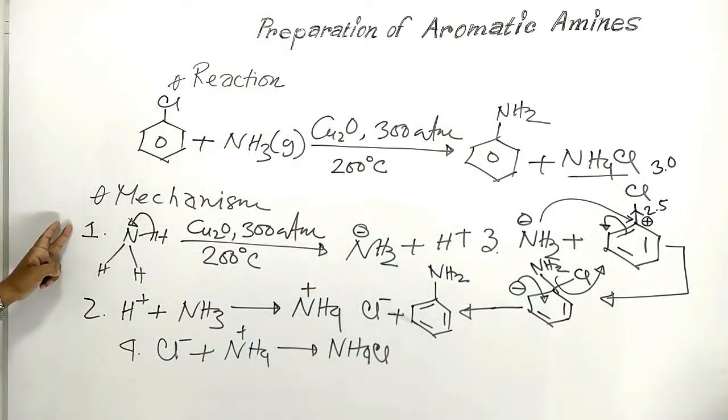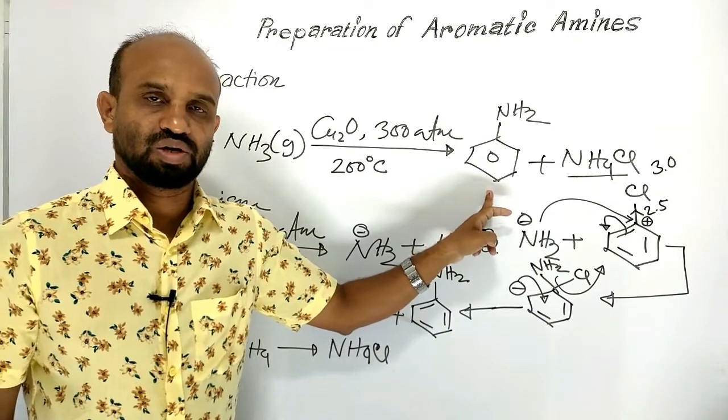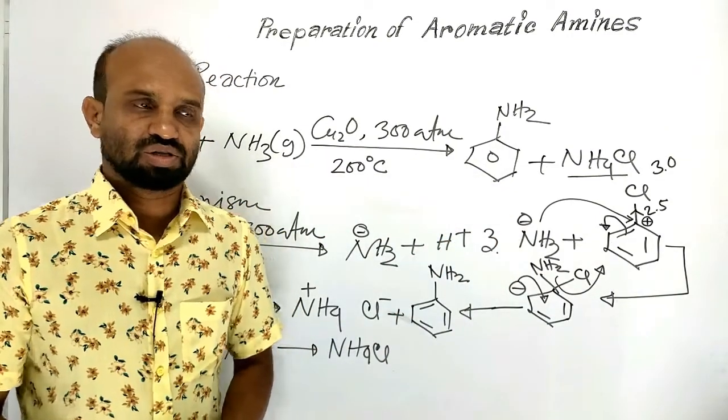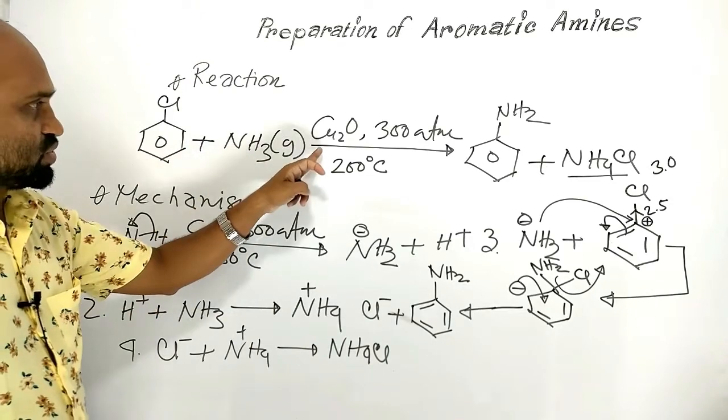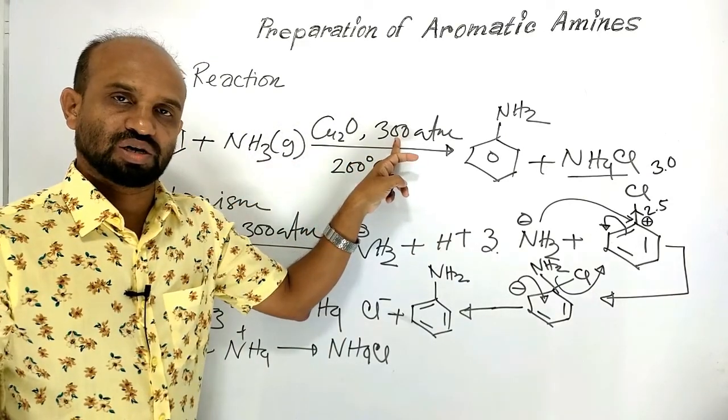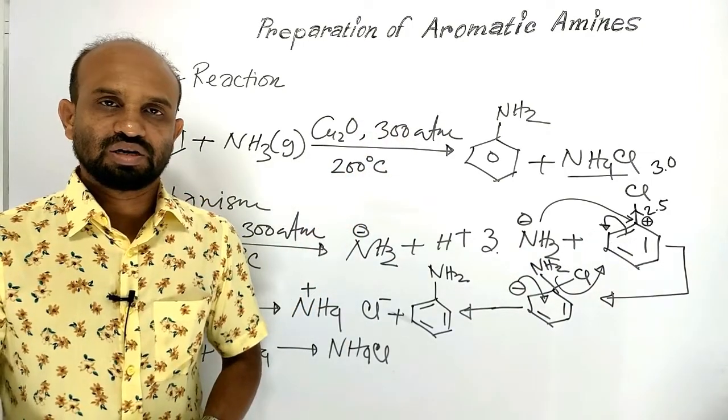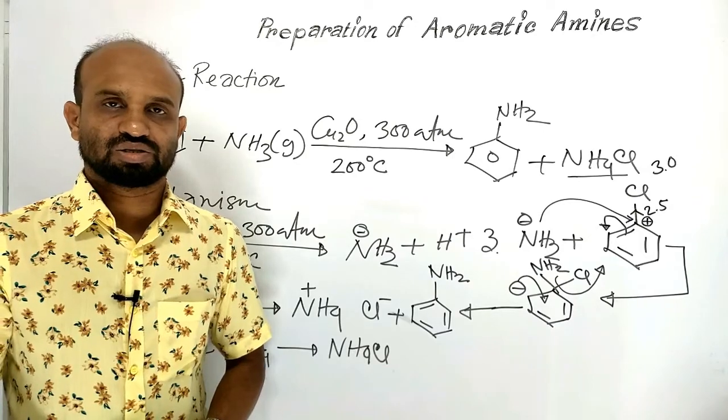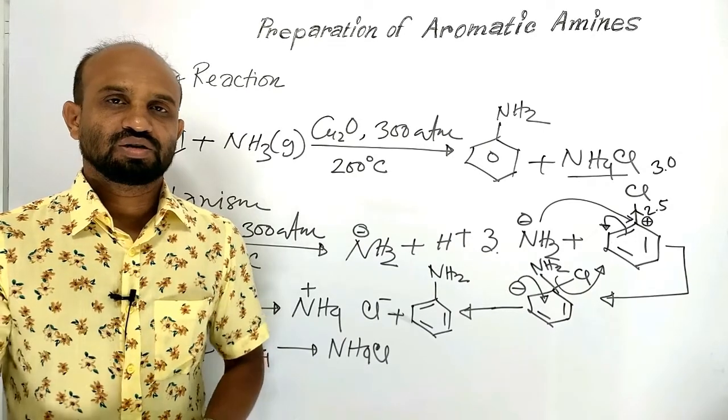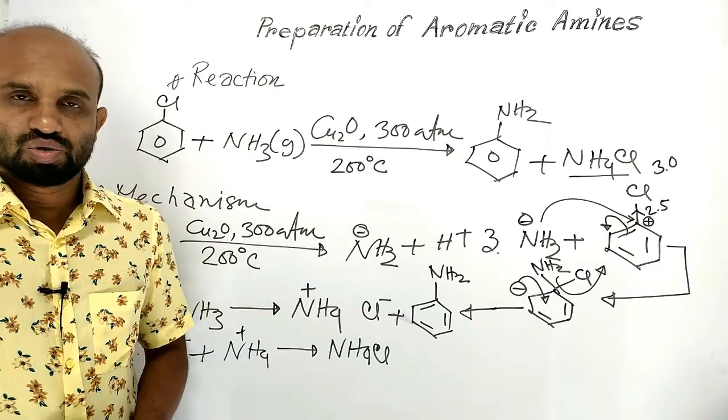So this is the mechanism by which chlorobenzene converts to aniline. When chlorobenzene is treated with ammonia in presence of copper oxide at 300 atmosphere pressure and if the reaction is carried out at 200 degrees Celsius temperature, then chlorobenzene converts to aniline through this mechanism.